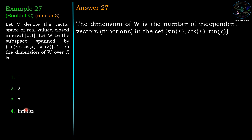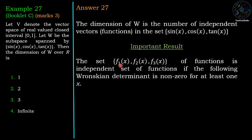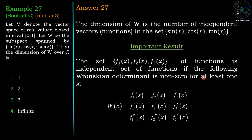The dimension of W is the number of independent vectors in the set {sin x, cos x, tan x}. An important result: a set of functions f1(x), f2(x), f3(x) is an independent set if the Wronskian determinant is non-zero for at least one x.